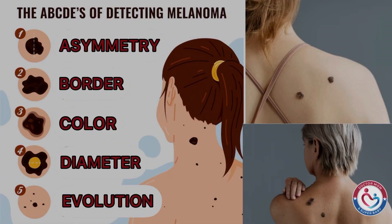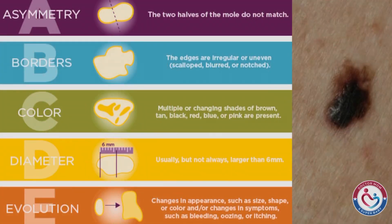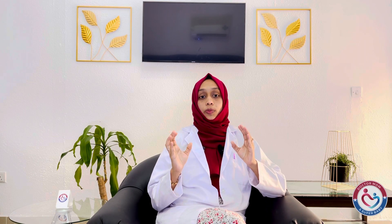There are five main characteristics to find the difference between these two — the ABCDs to detect melanoma. Let's see some examples and pictures to identify melanoma versus a normal mole.